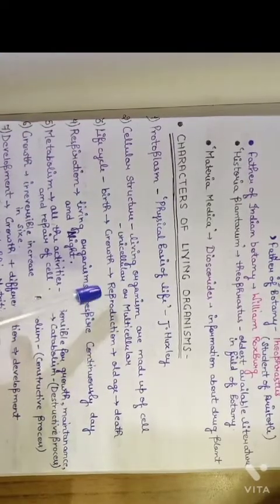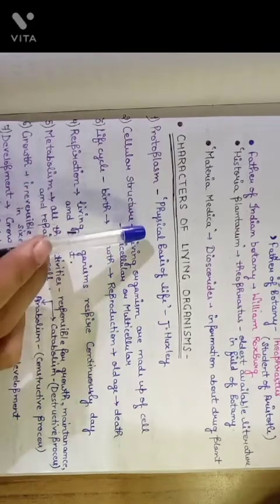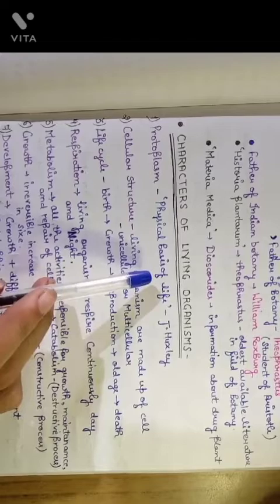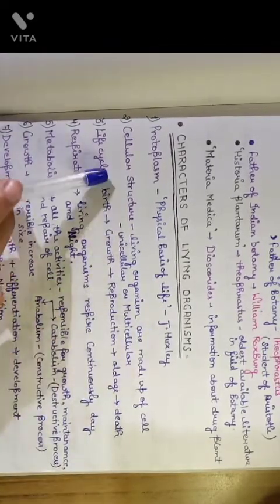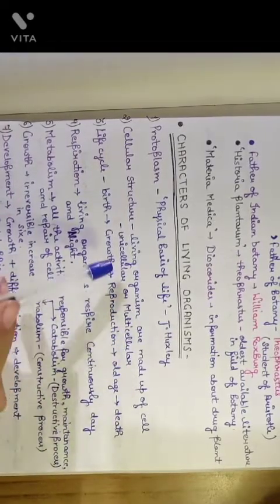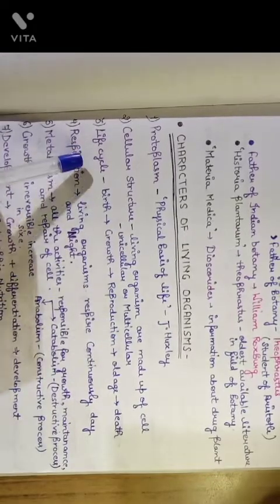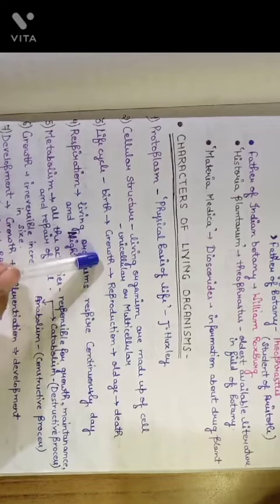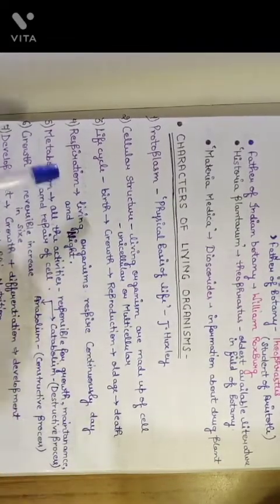Now we are going to learn characters of living organisms. First is protoplasm. Protoplasm is the physical basis of life, and this sentence was given by J. Huxley. Second, cellular structure - living organisms are made up of cells. They may be unicellular or multicellular. Life cycle has different stages like birth, growth, reproduction, old age, and then death.